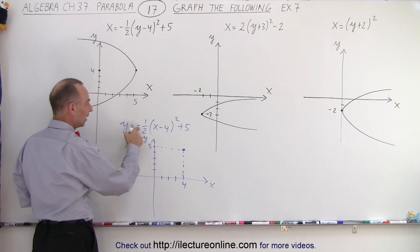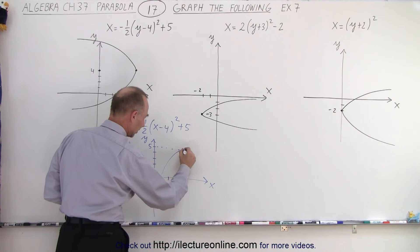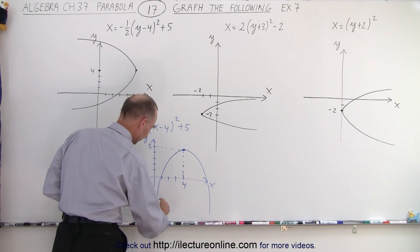It opens in the negative direction. And it's going to be wide because of 1 half. So that means that the graph will look like this. Like that.